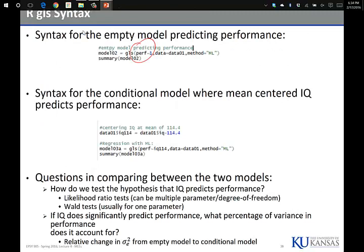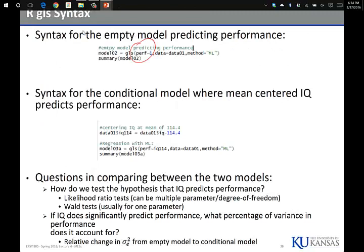The likelihood ratio test comes up with a test statistic like we do in every other hypothesis test. The likelihood ratio test is negative two times the difference in log likelihoods. Once you get this number, you compare it with a chi-square distribution. The degrees of freedom of this chi-square distribution are the number of parameters that are different in the two models. The empty model has two parameters — beta zero and residual variance. The model with IQ has three — intercept, slope, and residual variance. The difference in parameters is one. The likelihood ratio test will be compared to a chi-square with one degree of freedom.